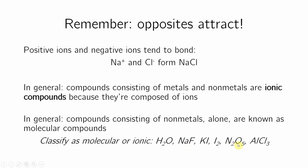N2O5. N and O are both nonmetals, this is going to be molecular. Aluminum is a metal, this is a nonmetal, this is going to be ionic.